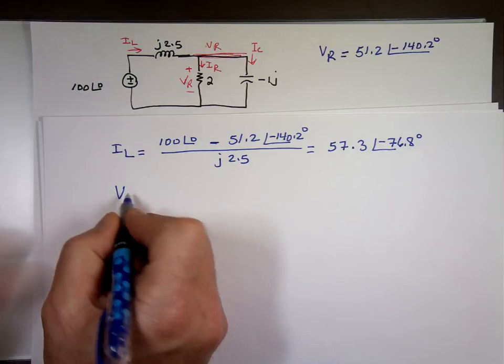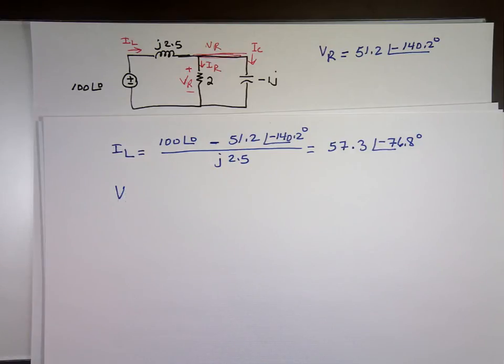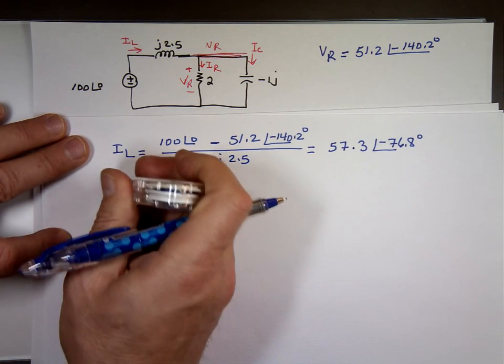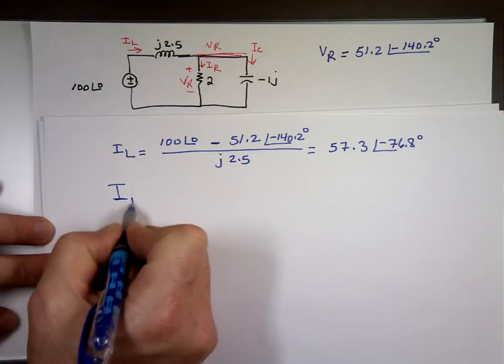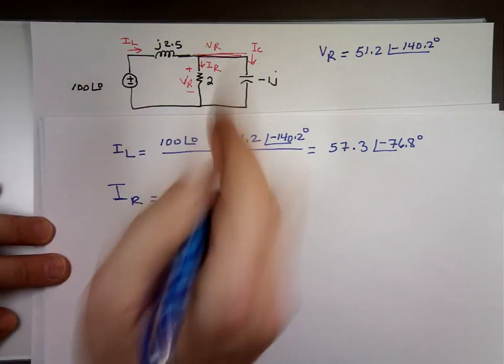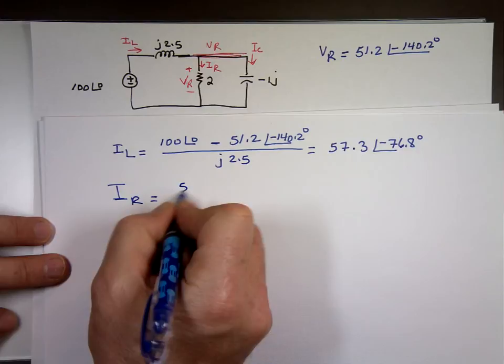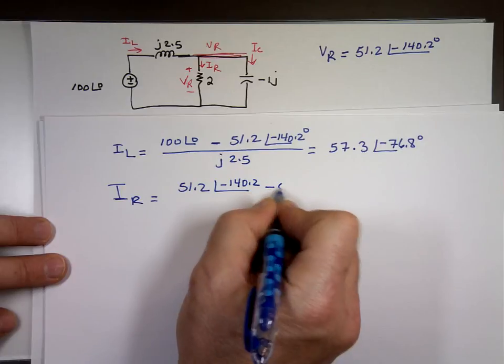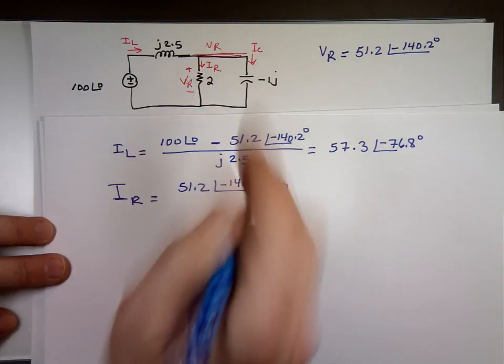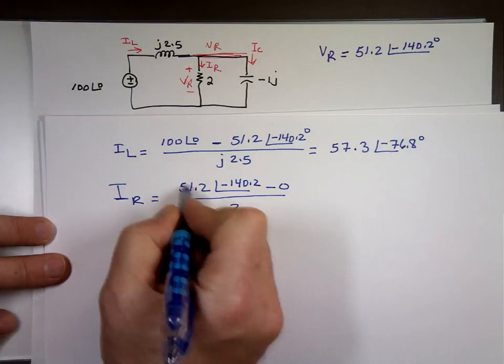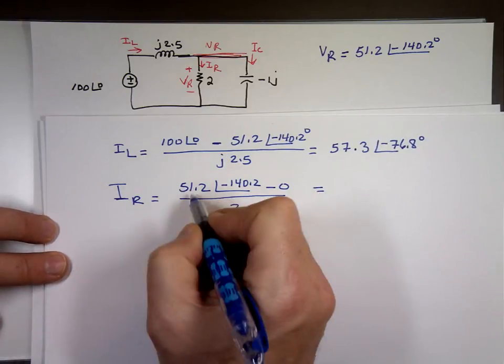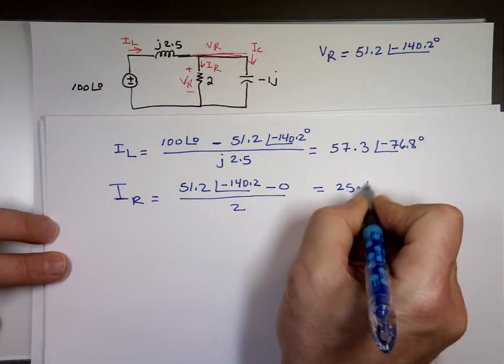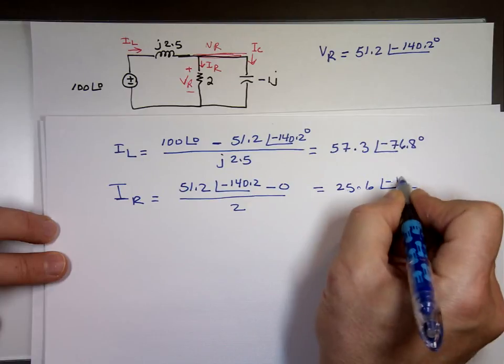I sub R, not VR. We know what VR is. I sub R, VR which is 51.2 angle negative 140.2 minus 0, divided by 2. When you divide by 2, you just divide that number by 2. So I don't need a calculator for that. You have 25.6 angle negative 140.2.